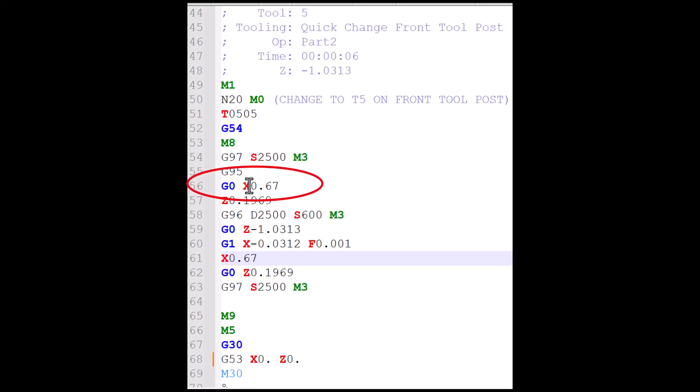Notice in the Fusion 360 G-code that the starting X position for the parting tool is a positive 0.67 inch position. This is the front position for the parting tool, utilizing the front tool post. So I changed this value to a negative 0.67 value for the rear tool post position.